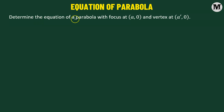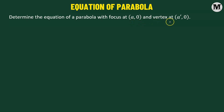In this problem, we need to determine the equation of a parabola such that the focus of the parabola is at point a, 0 and the vertex is at the point a prime, 0. Let us begin.